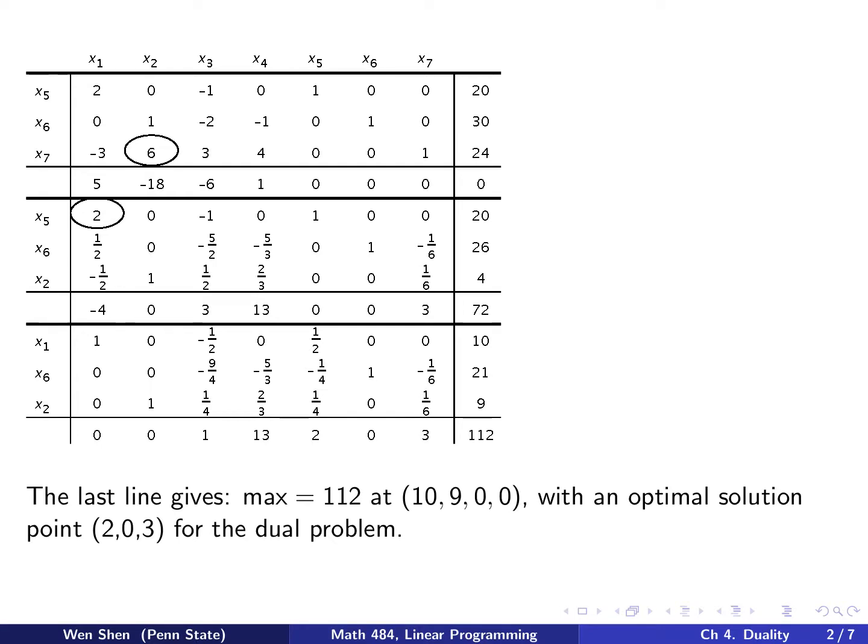The conclusion of the algorithm is mostly stored in the last line in your tableau. Here we would conclude that the minimum is negative 112, which means the maximum is 112, and it's obtained at the basic solution: x1 is 10, x2 is 9, and x3 and x4 are 0.